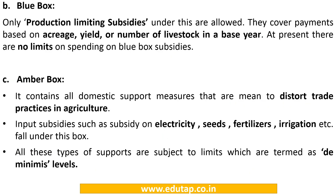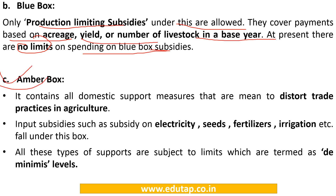Like Green box, Blue box subsidies are also allowed without any limit because only production-limiting subsidies are allowed under it. Direct payments are made to farmers on fixed areas, yields, or number of livestock in a base year. On the other hand, Amber box includes input subsidies on electricity, seed, fertilizers, irrigation, etc.